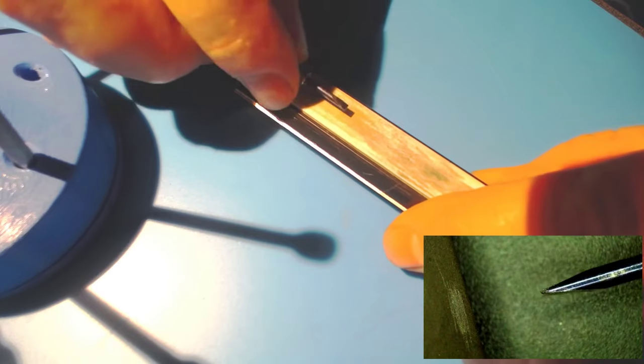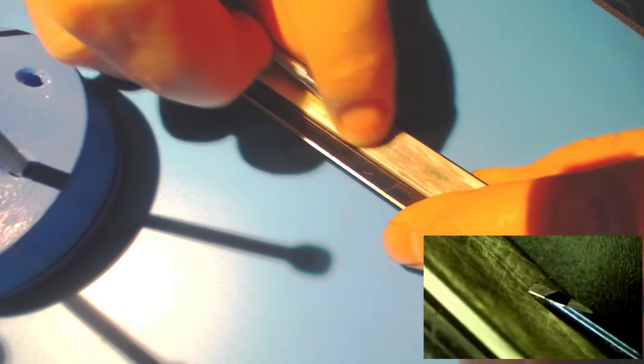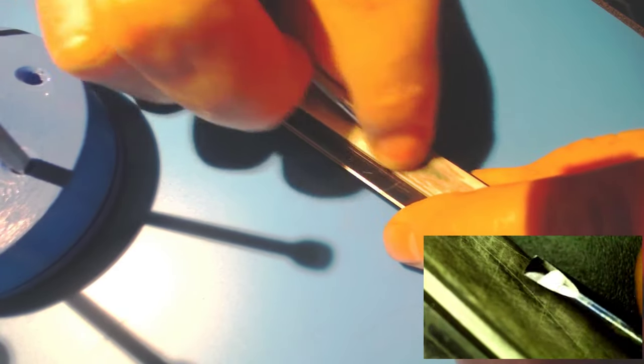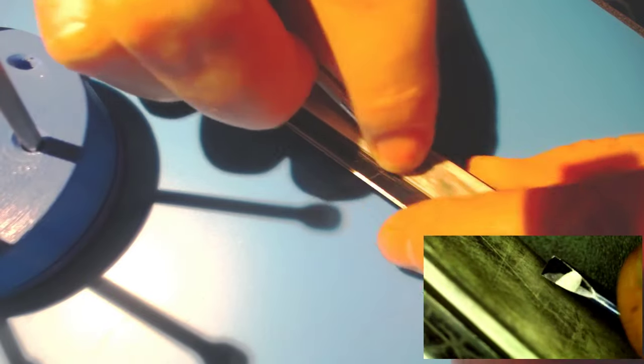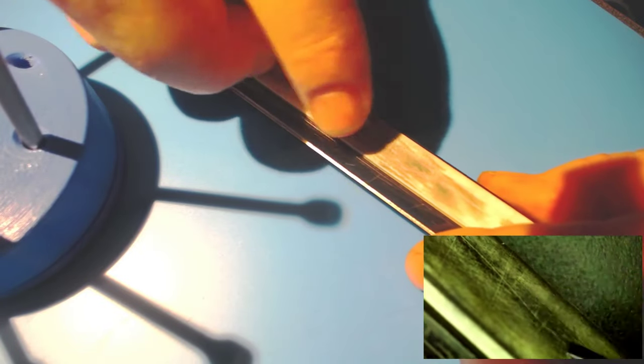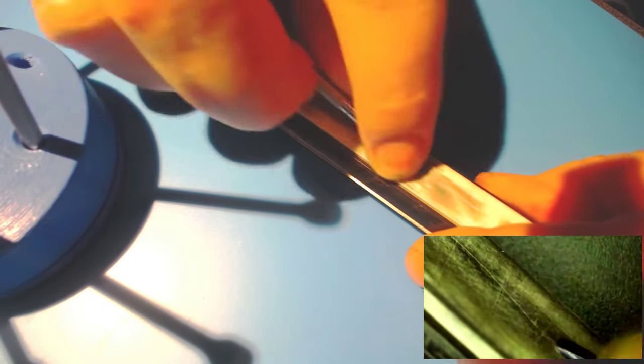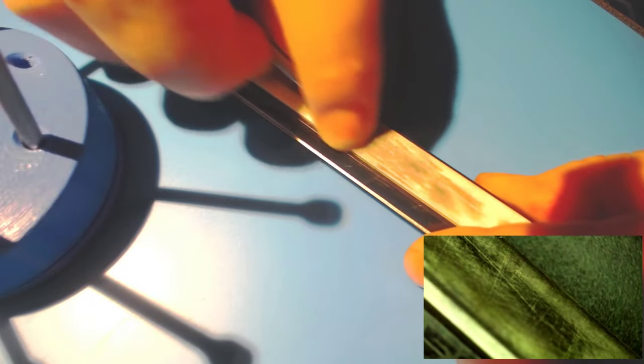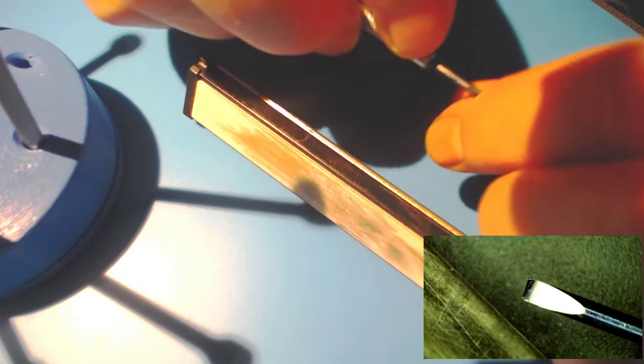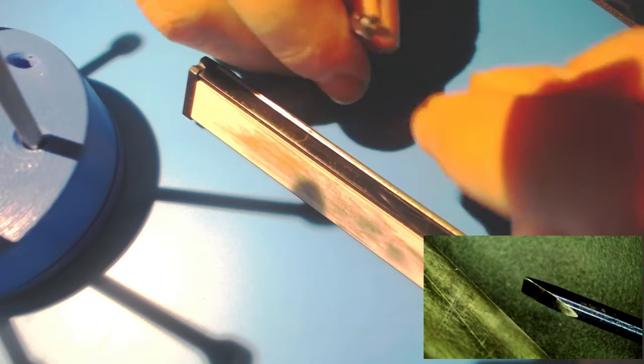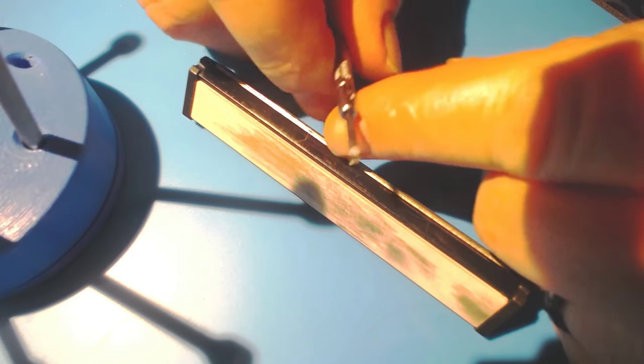And then go back and try to get the edges flat as possible and then polish it with the ceramic. This helps to make it so it won't mar up any of the screws that you have. This one is pretty much finished.